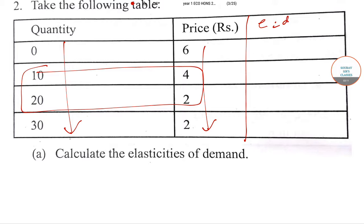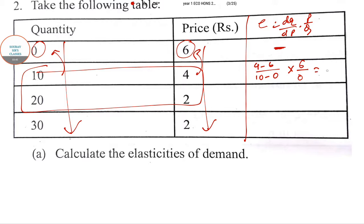E = dQ/dP times P/Q. The first case won't be there because before this there is no quantity. The second case is (4 - 6)/(10 - 0) divided by the previous price 6 times the previous quantity 0. So in this case 0 is there, so this is infinite.